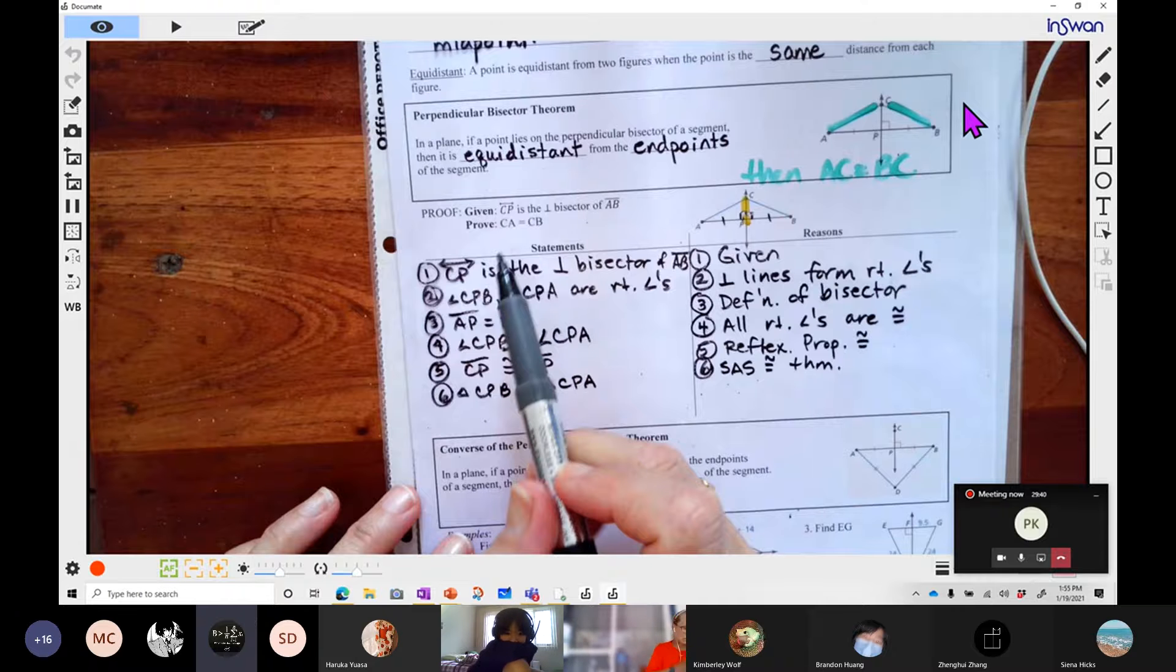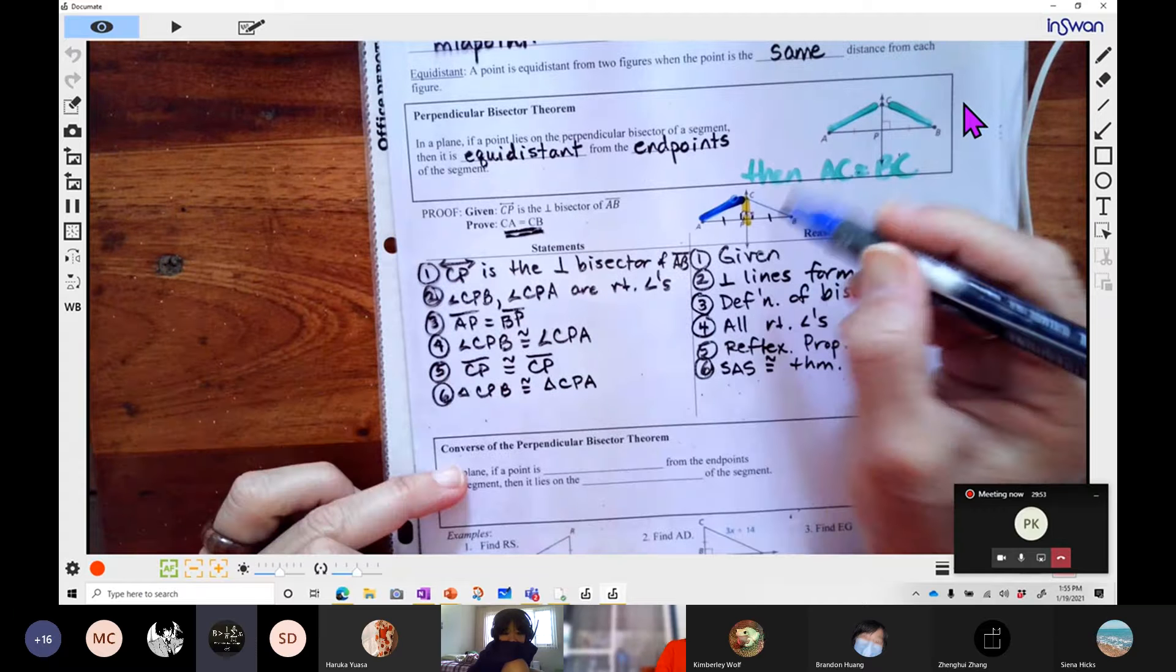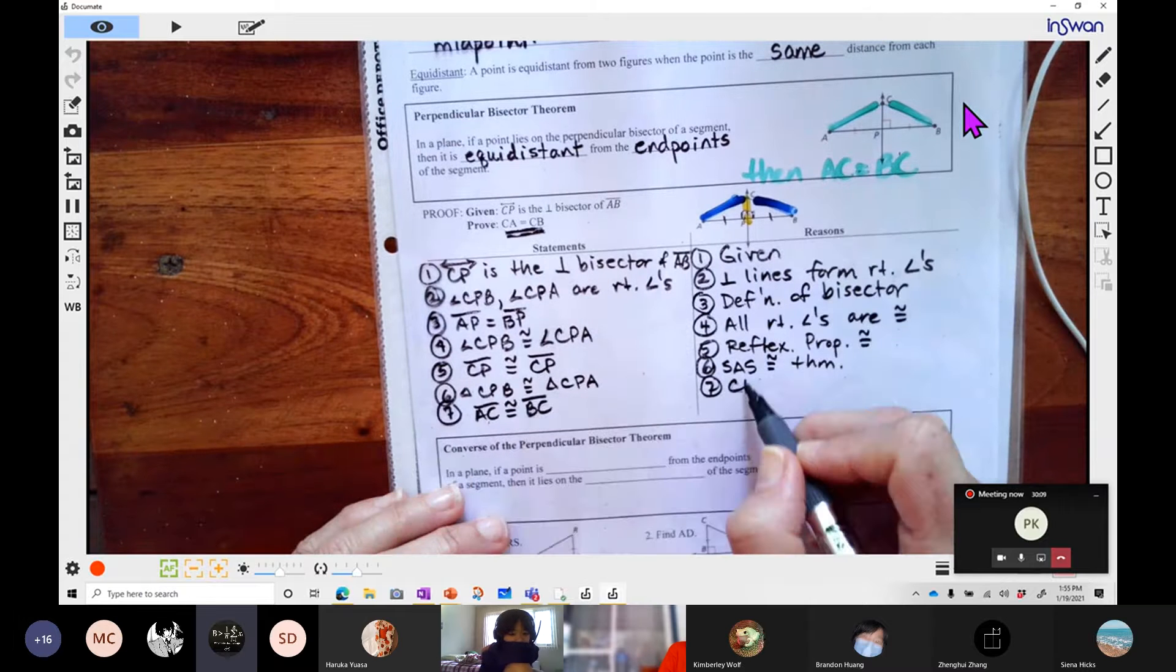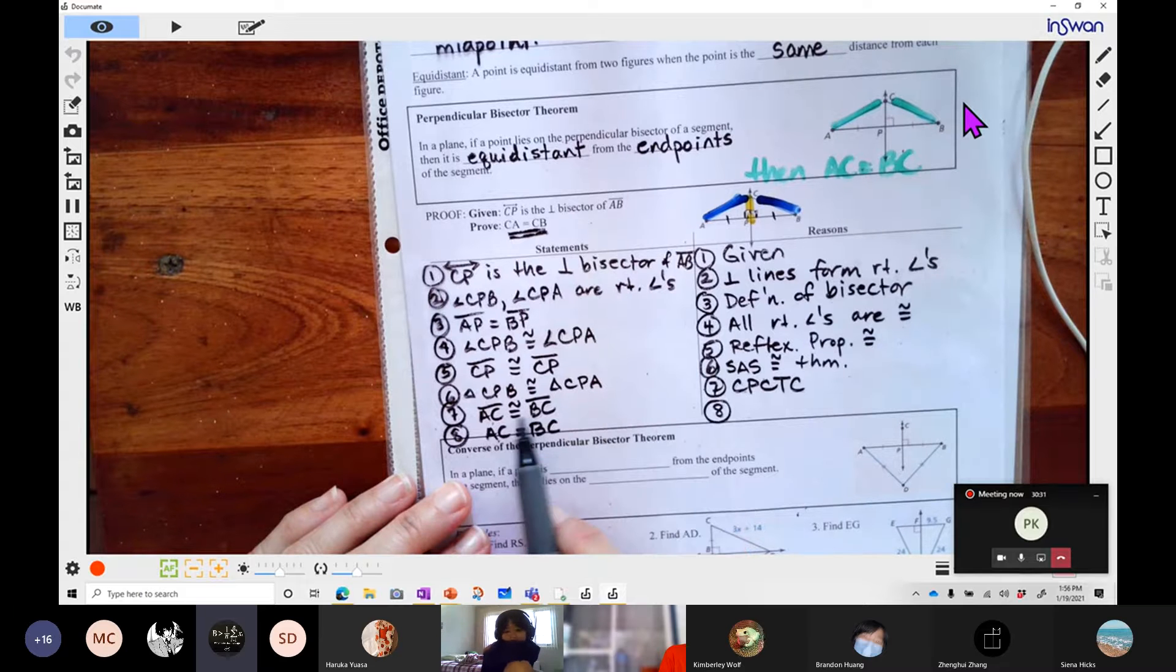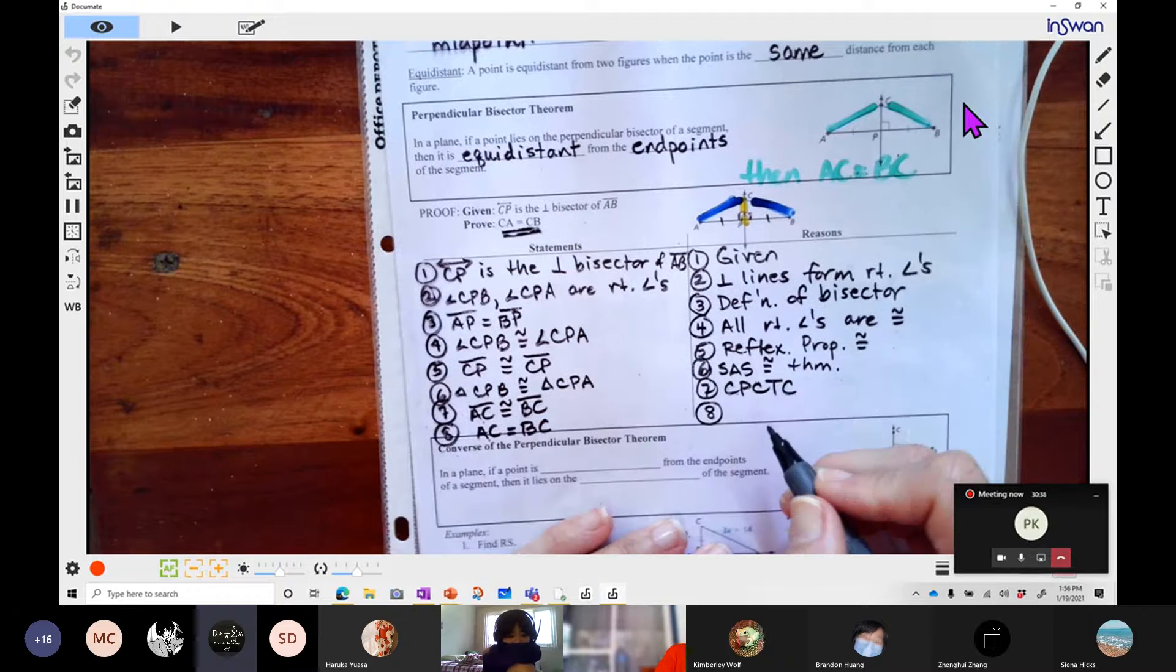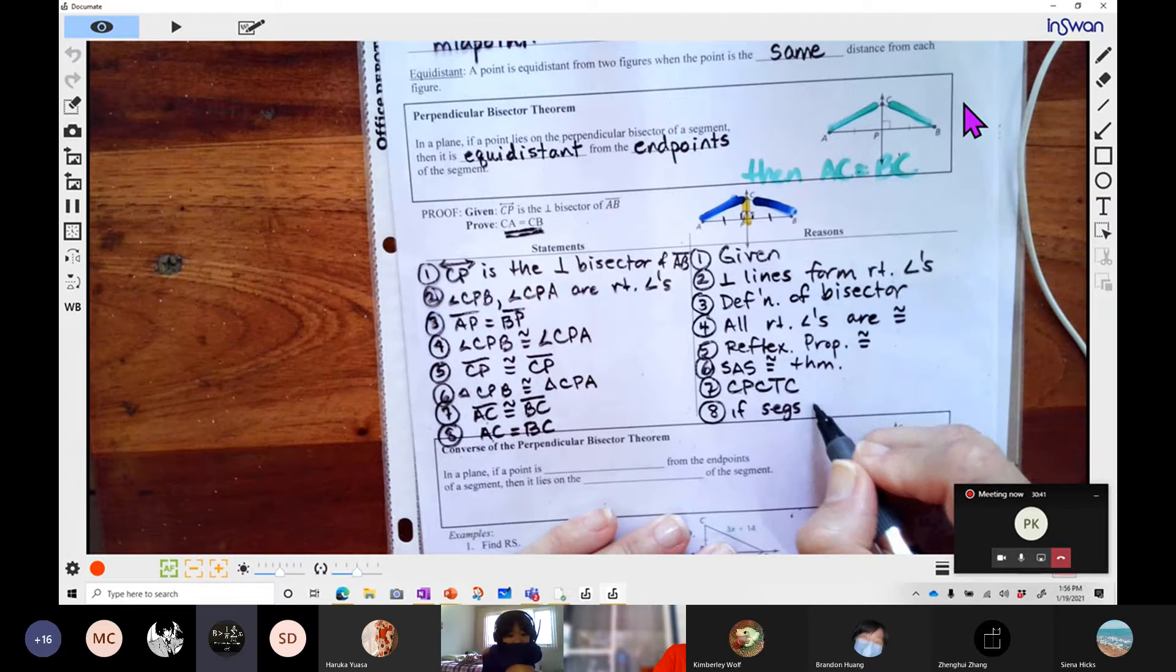I'm going to say that this blue line is congruent to this blue line. And hopefully you remember that from 5.5. So I can now say that AC is congruent to BC because corresponding parts of congruent triangles are congruent. And then last, but not least, we want to say that the measurements of those segments are the same. So AC is equal to BC. Remember this congruent sign means the shape is exactly the same, but an equal sign means the measurements are exactly the same. So if segments are congruent, then they are equal.